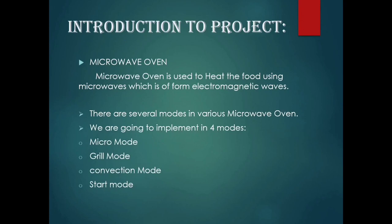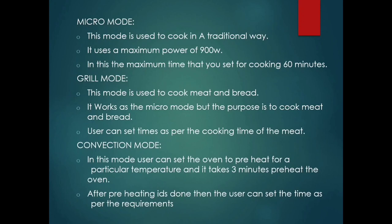A microwave oven uses microwaves, which form electromagnetic waves, to heat food. There are several modes in various microwave ovens; we are implementing four modes. The first is micro mode — used to cook food in a traditional manner. In our project, the maximum power is 900 watts and the maximum cooking time is 60 minutes. The second is grill mode — used to cook bread and meat, working similarly to micro mode but purposed for cooking meat and bread.